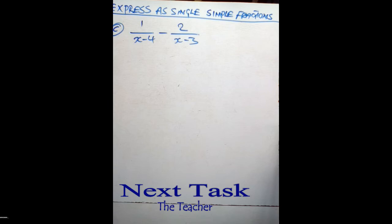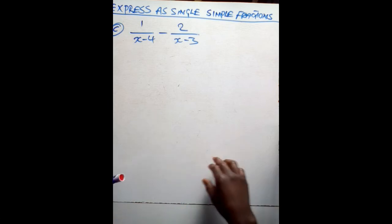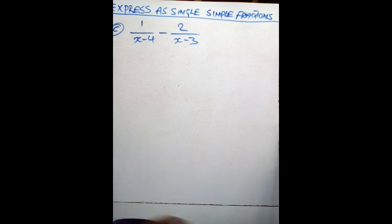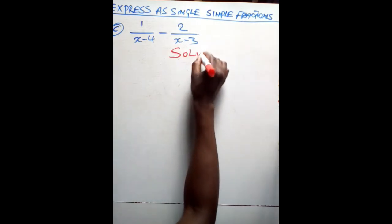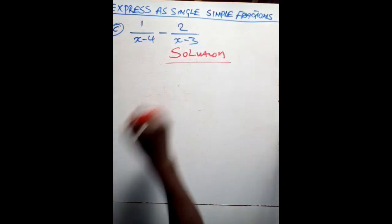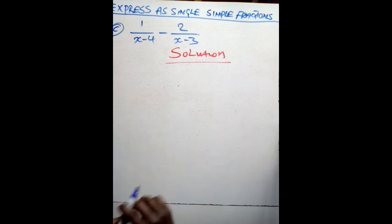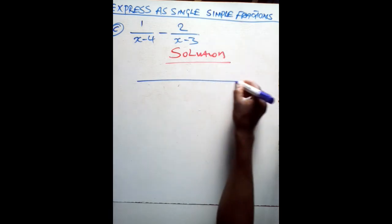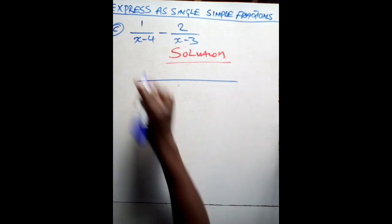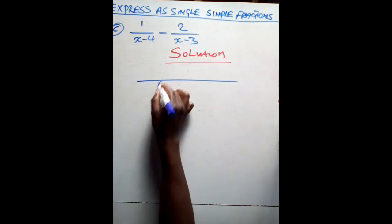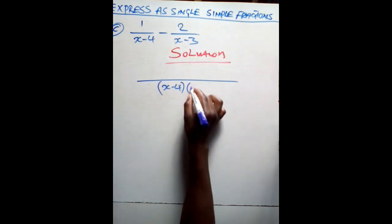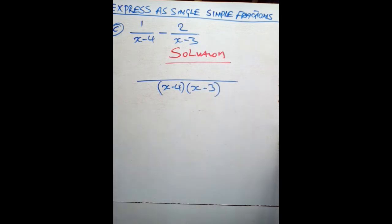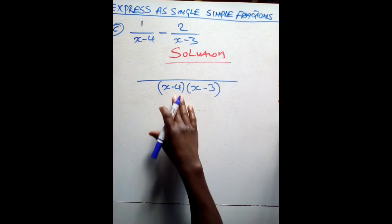On the solving board, we have to express 1 over (x minus 4) minus 2 over (x minus 3), expressed as a simple single fraction in its simplest form. What you do first: find the lowest common denominator. You draw a line, which stands for division, then you multiply the denominators in brackets — (x minus 4)(x minus 3). That is the lowest common denominator we are going to use. Then from there, you cross multiply.